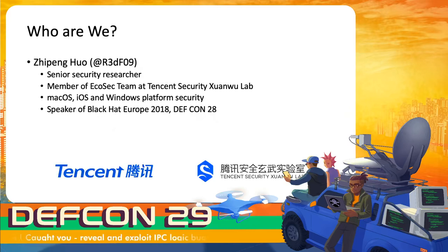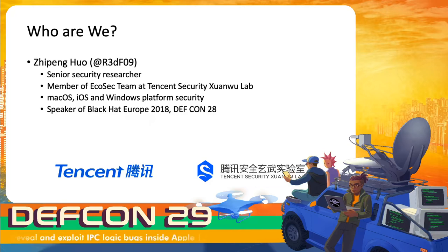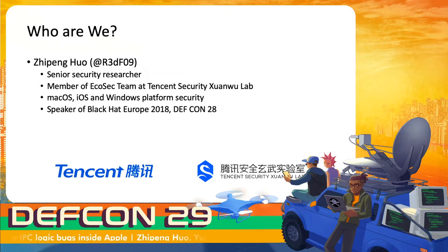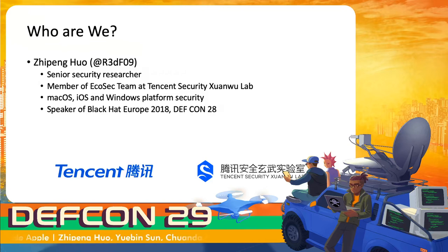First, a self-introduction. Jupon Ho is a senior security researcher and a member of the EgoSec team at Tencent Security Sharm Lab. His research focuses on macOS, iOS, and Windows platform security. He has found and reported many vulnerabilities to Apple and Microsoft, and is a speaker of Black Hat Europe 2018 and DEF CON 28.